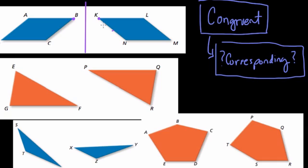Which means that K and B correspond to each other. You can almost imagine the shape has been flipped. And then that means that A and L correspond, and C and N correspond, and then D and M correspond.